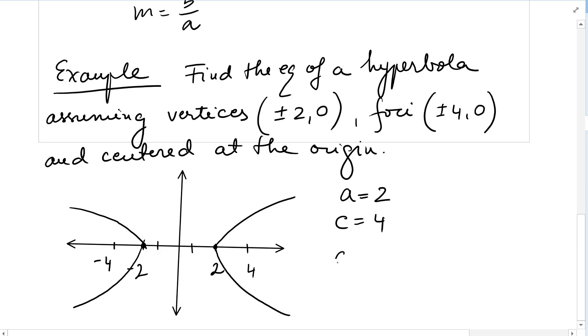So a² + b² = c² would help us find b². So b² = 16 - 4, b² = 12, b = ±2√3.